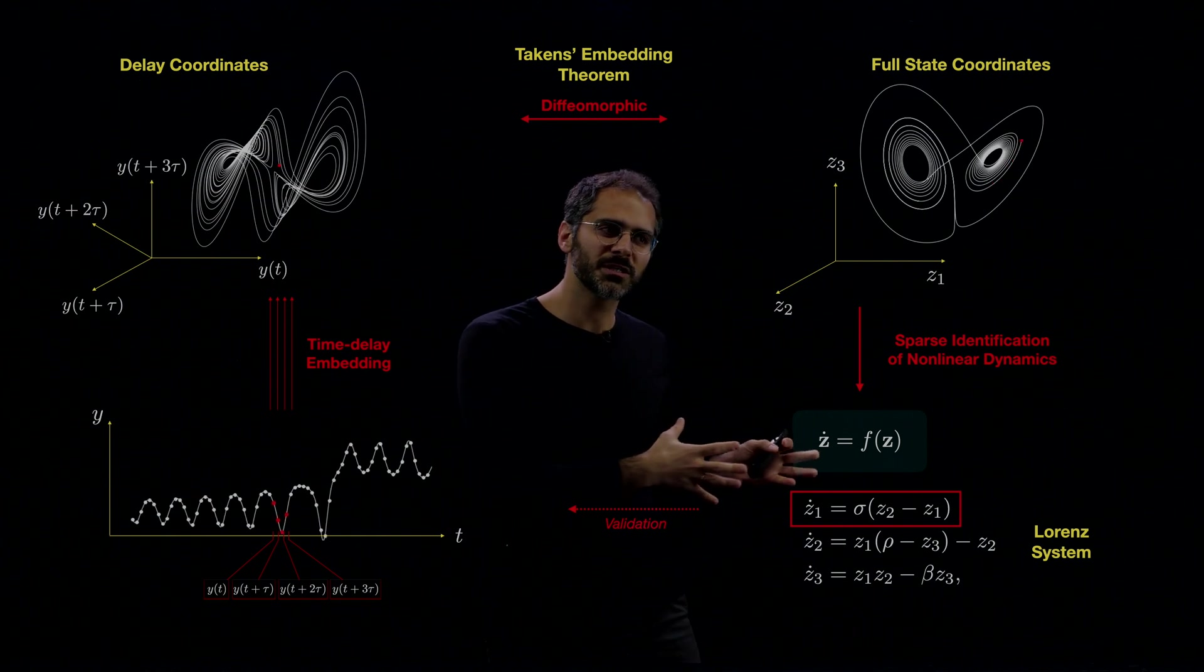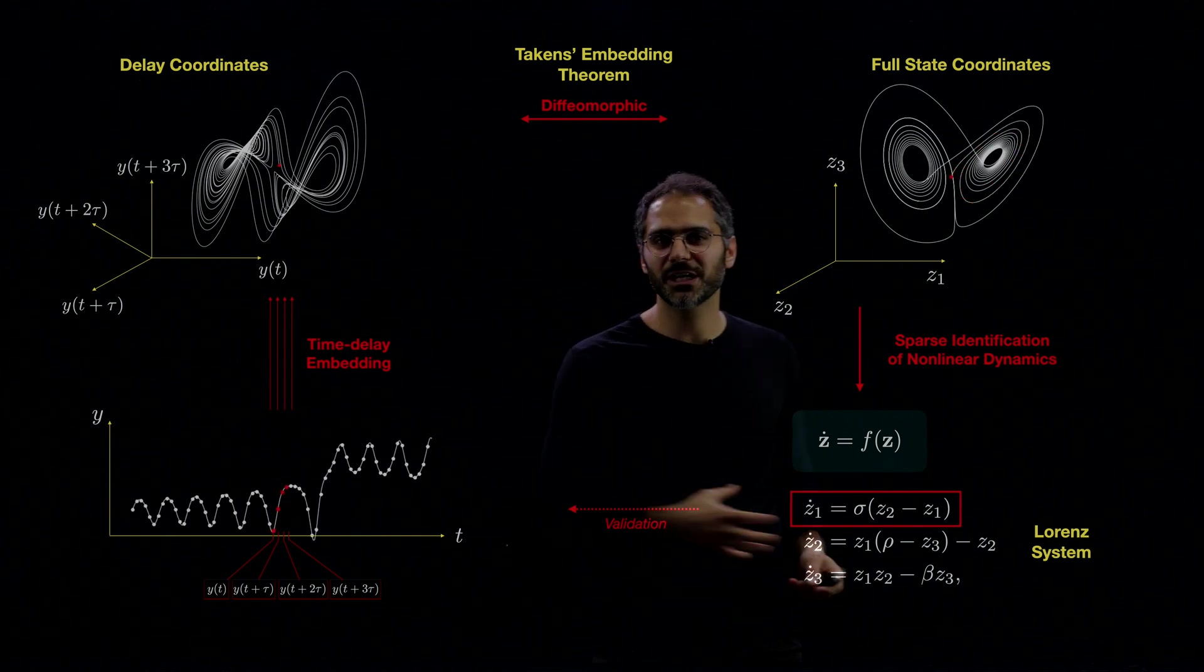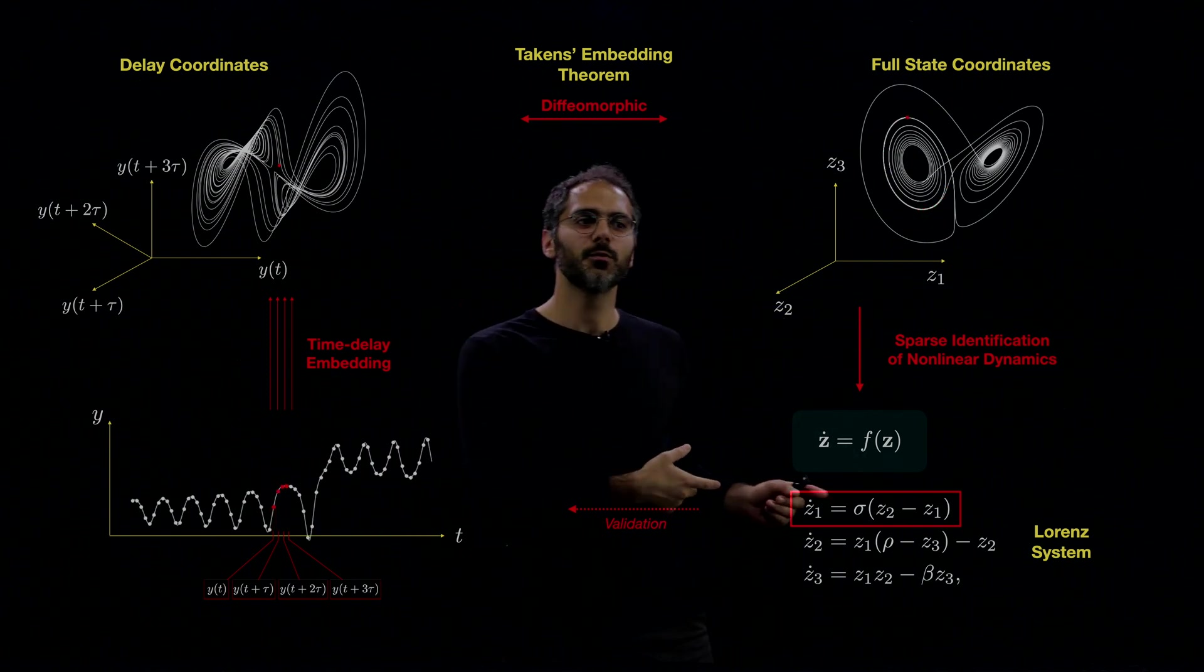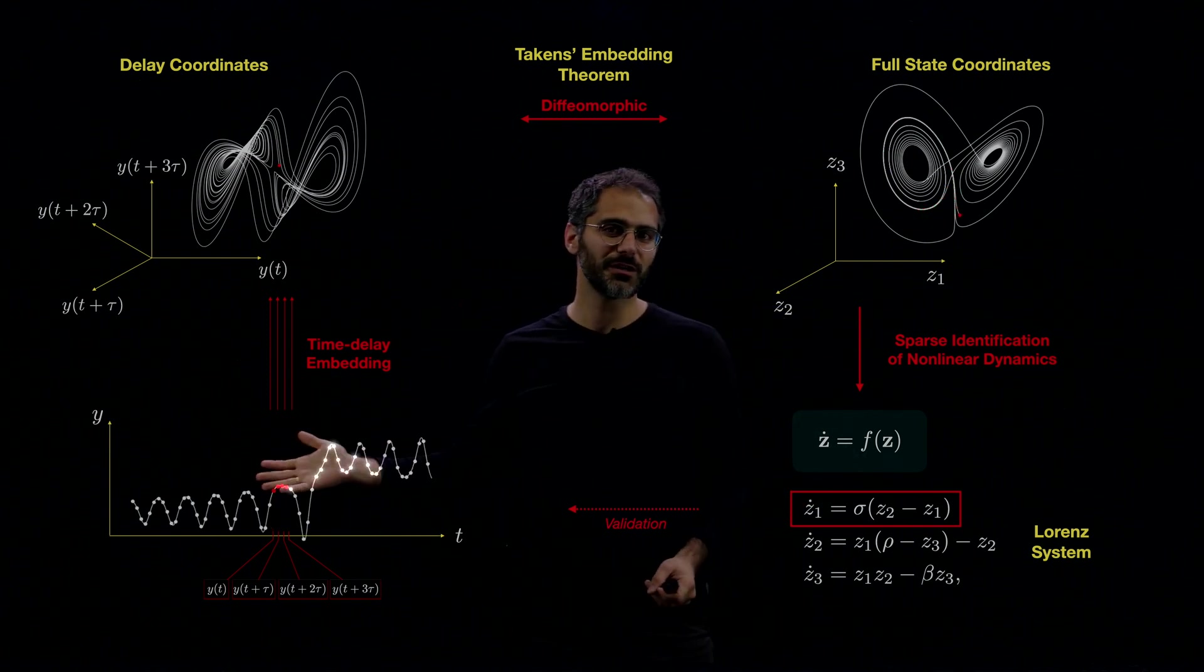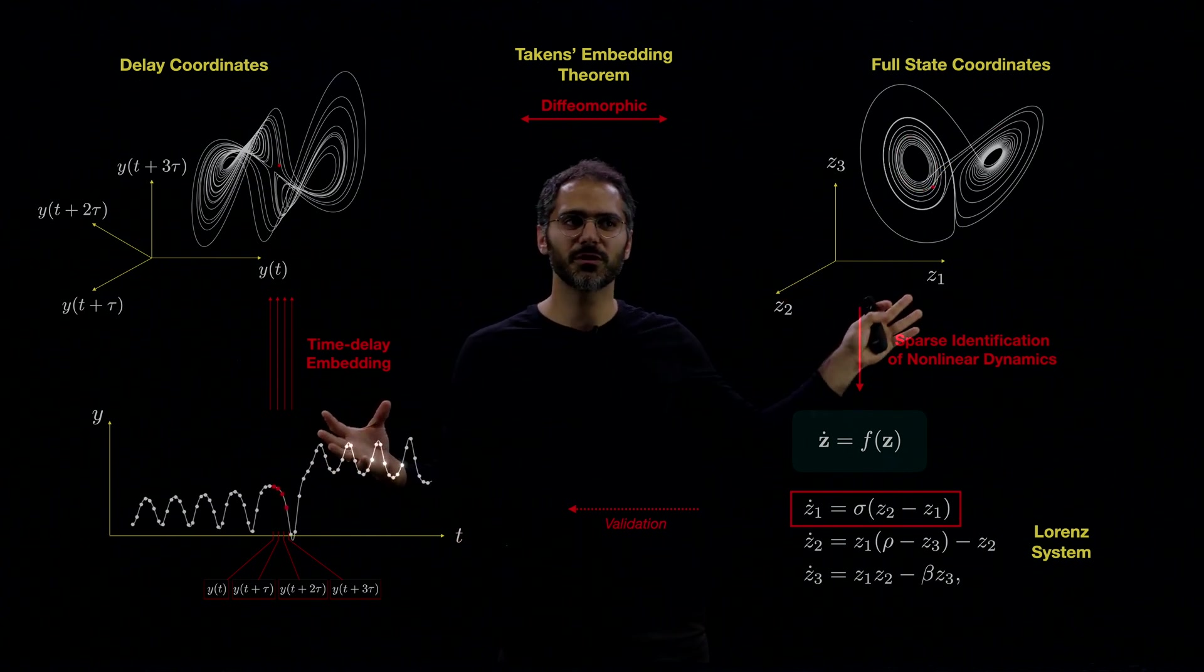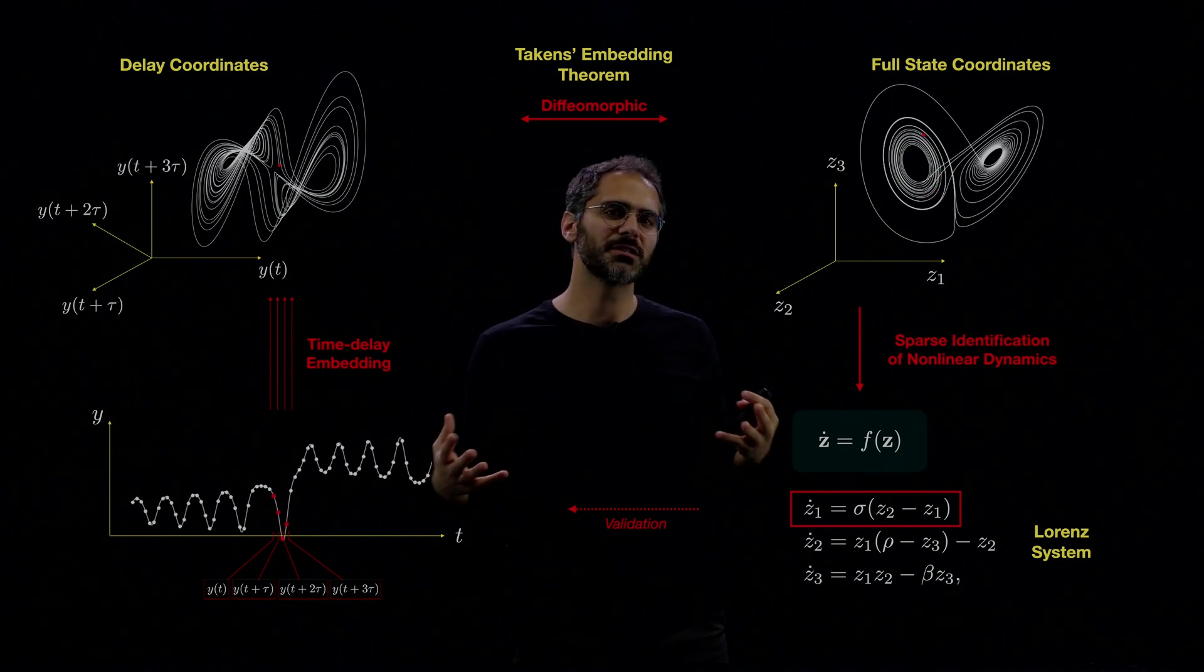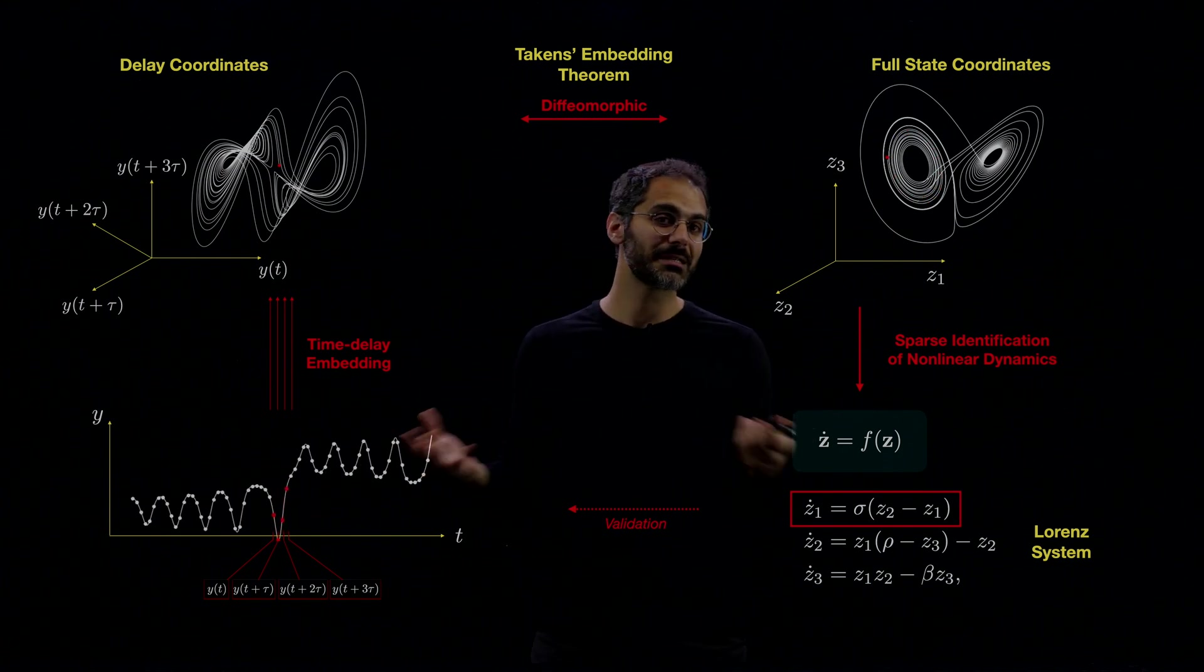So for validation, we start with a known dynamical system, high-dimensional dynamical system, and we project it on 1D. For example, we can take z₁ to be actually y(t), and then therefore closing the loop and developing and refining each one of these pieces. So that we can, at some point, discover a method that works for dynamical systems that we don't know.